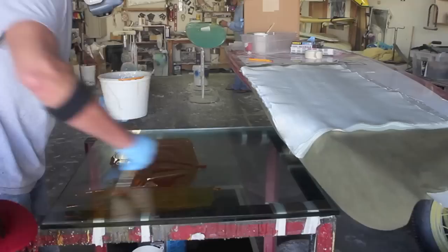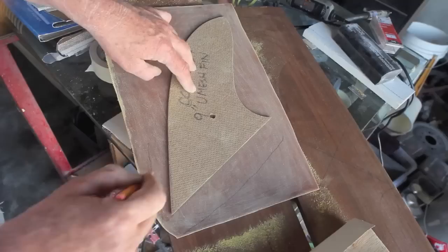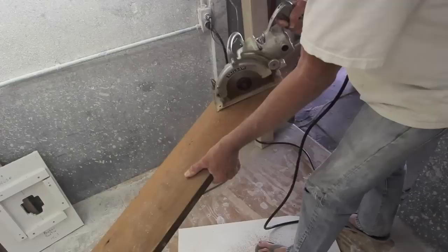I start by making a thin panel with 10 layers of 8oz bowland and amber resin. I'll be sandwiching this between two pieces of redwood and it'll make a 1 inch thick fin blank.